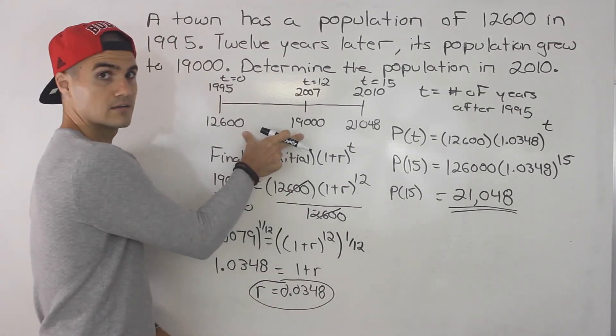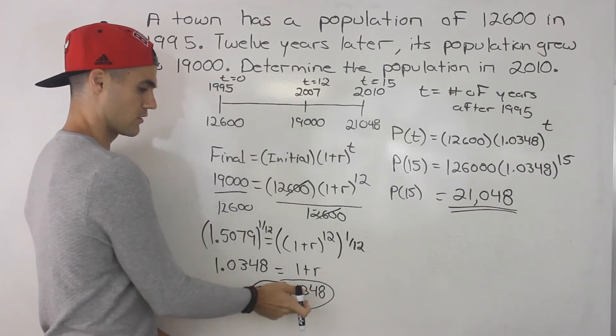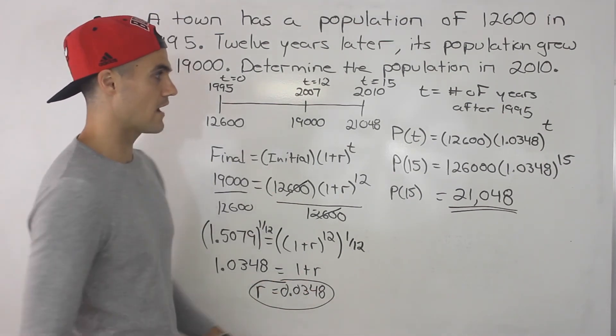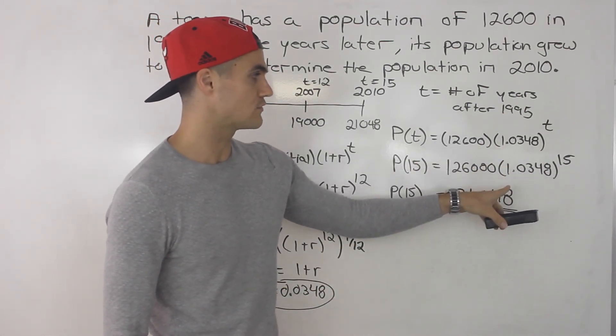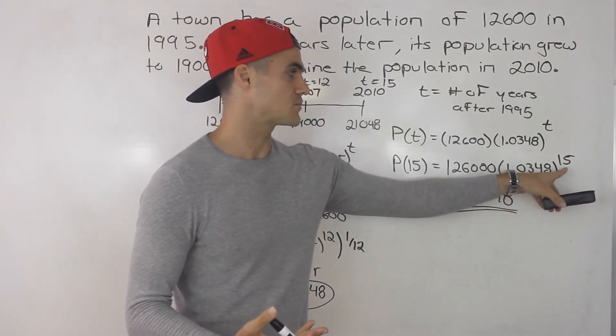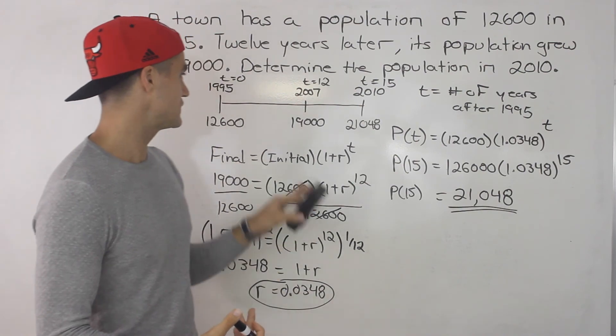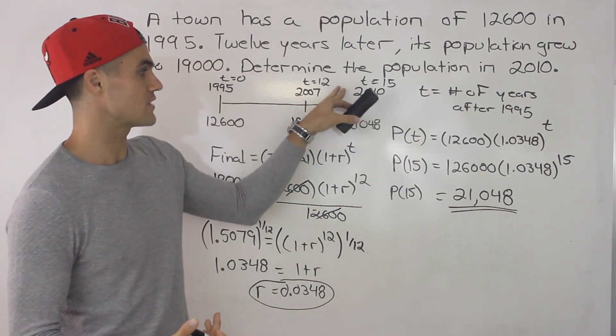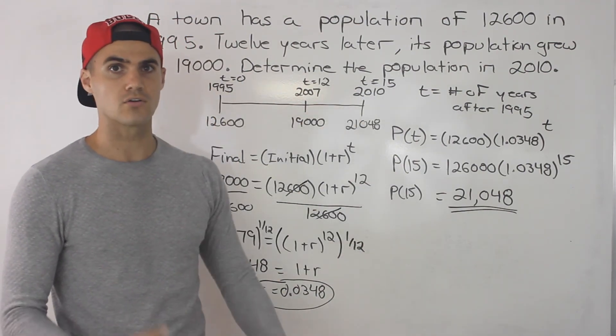So first thing you got to do, find the annual rate of growth. That's what it is. Then when you have that, you can make a formula, and then you could find the population in any year. And in this case, we want it at a t value of 15, 15 years after 1995, which is 2010. That's your final population.